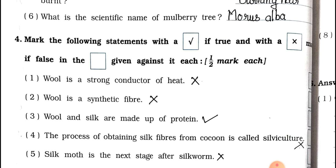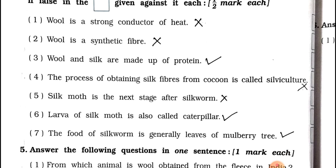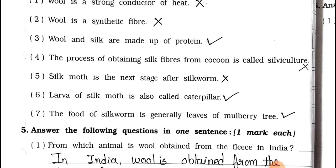Main Four — Mark the following statements True or False. Question 1: Wool is a strong conductor of heat. Answer: False. Question 2: Wool is a synthetic fiber. Answer: False. Question 3: Wool and silk are made up of protein. Answer: True.